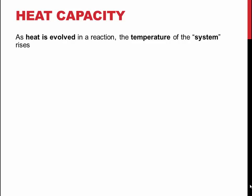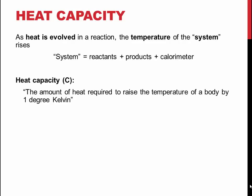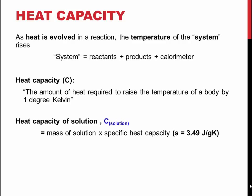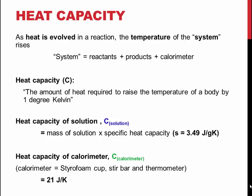Heat capacity is also important when calculating the enthalpy change for this reaction. The heat capacity of a body is defined as the amount of heat needed to raise its temperature by one degree. Knowing the temperature change over the course of the reactions in Part A and B, the heat capacity of your solution and calorimeter will allow you to calculate the change in enthalpy. The solution has a specific heat capacity of 3.49 joules per gram kelvin, which must be multiplied by the mass of your solution. The heat capacity of the calorimeter is simply 21 joules per kelvin, and includes the thermometer and magnetic stir bar.